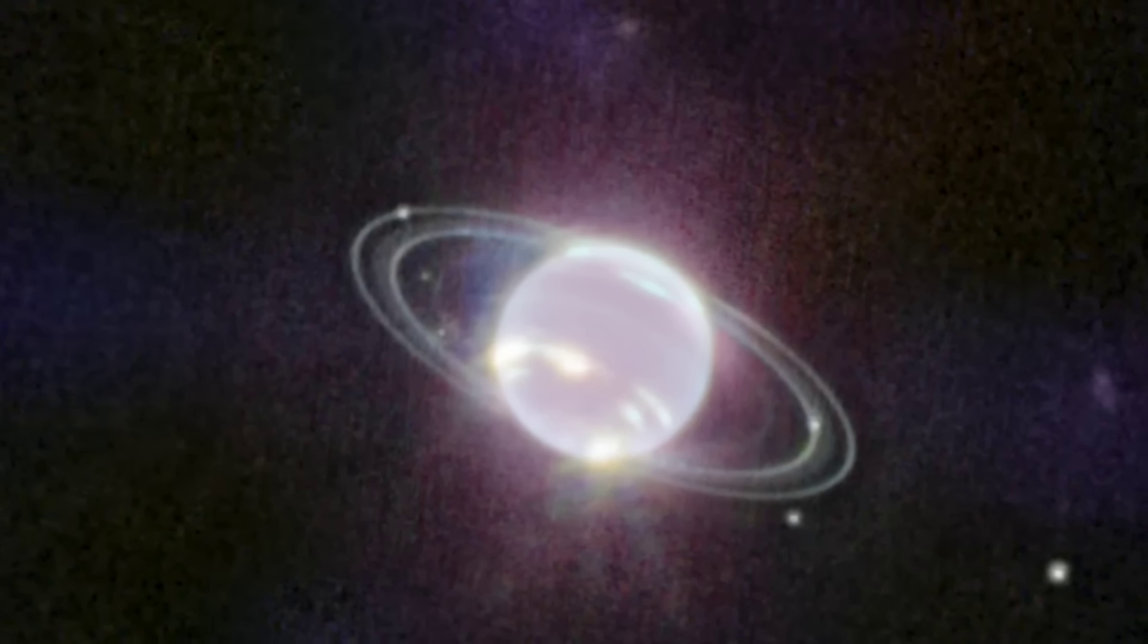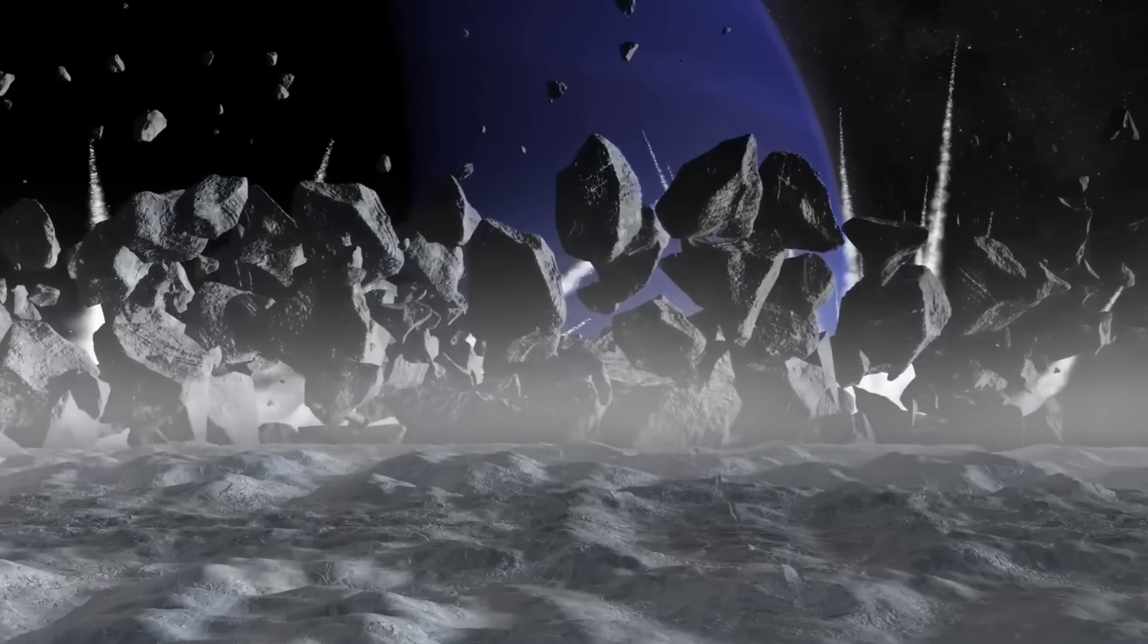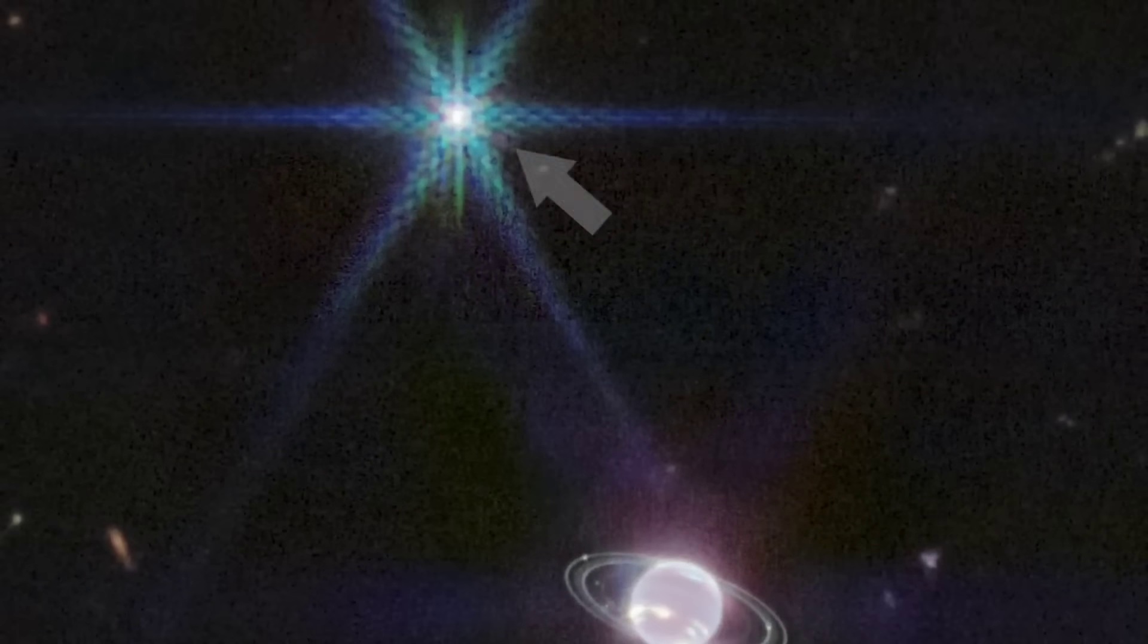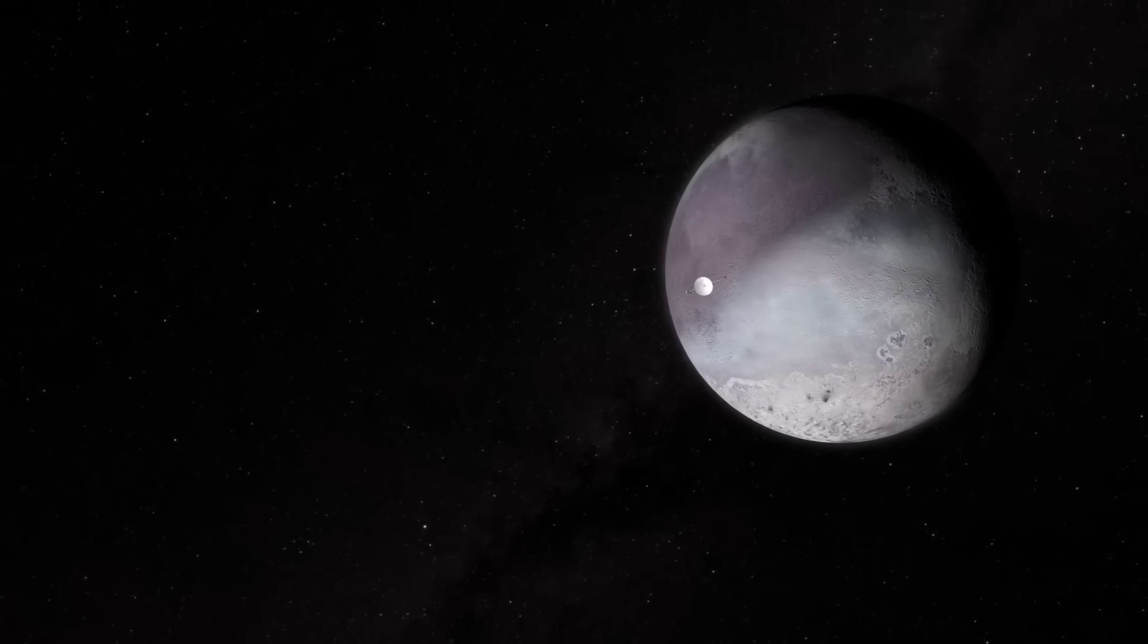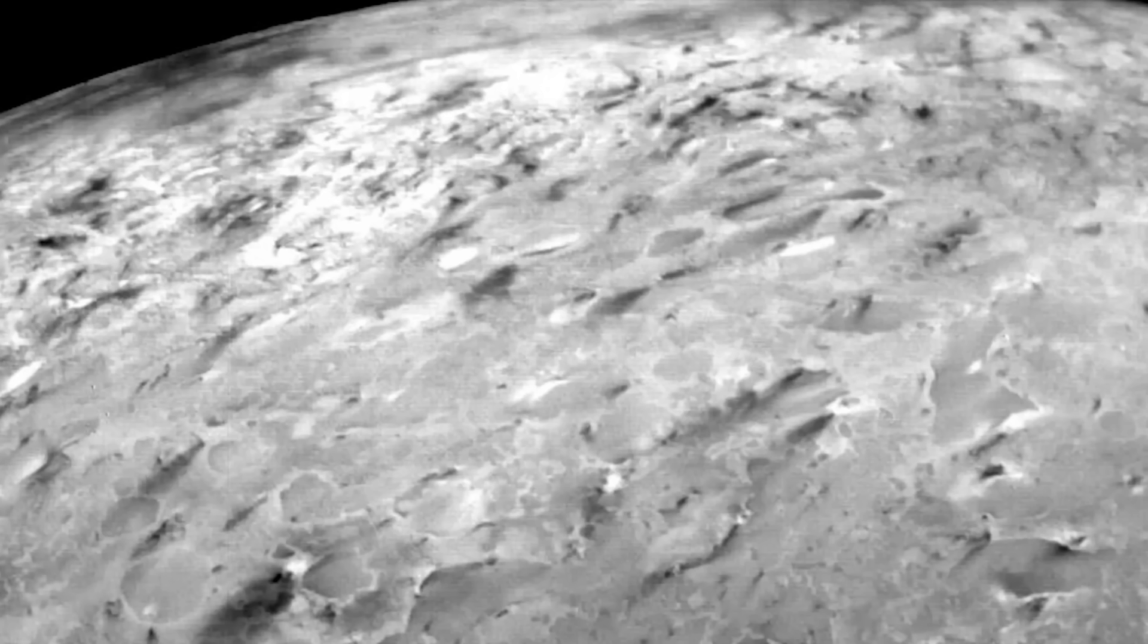James Webb's near-infrared camera images objects in the near-infrared range from 0.6 to 5 microns, so Neptune does not appear blue to Webb. In fact, the methane gas so strongly absorbs red and infrared light that the planet is quite dark at these near-infrared wavelengths, except where high-altitude clouds are present. Such methane ice clouds are prominent as bright streaks and spots, which reflect sunlight before it is absorbed by methane gas.